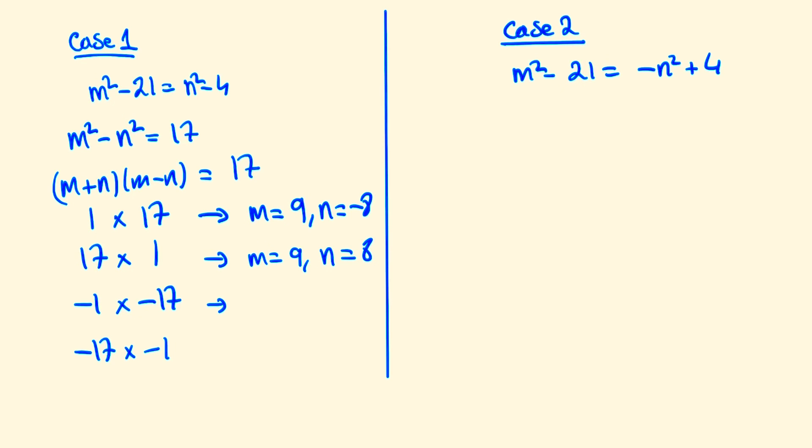In the third possibility we have m = -9 and n = 8, and lastly m = -9 and n = -8. So in total, the solutions here for m and n are ±9 and ±8.